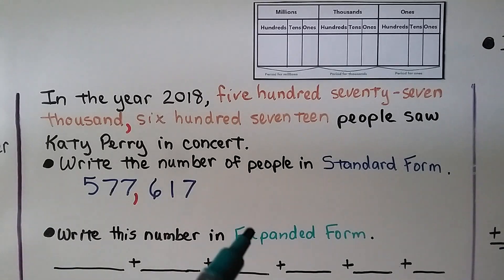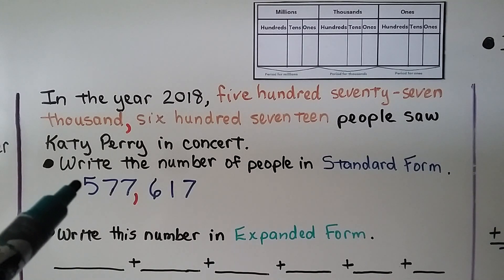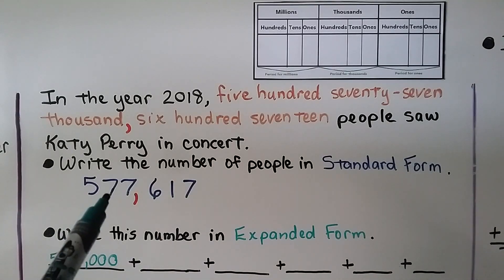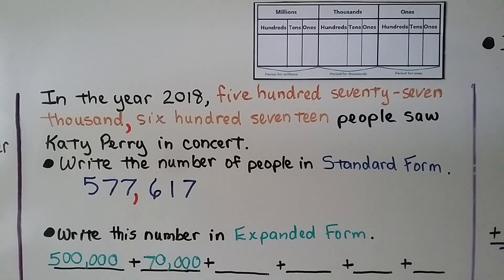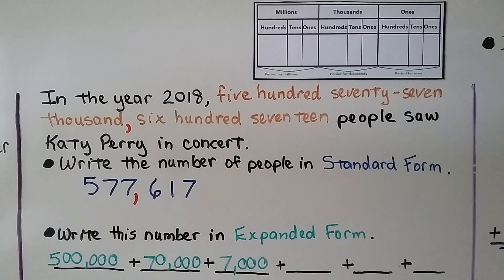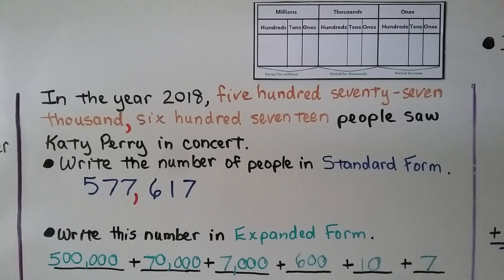Now it's telling us to write this number in expanded form. We look at each place value: five hundred thousand, then the seven in the ten thousands place is seventy thousand, the seven in the one thousands place is seven thousand, the six in the hundreds place is six hundred, the one in the tens place is ten, and the seven in the ones place is seven. We've written it in expanded form.